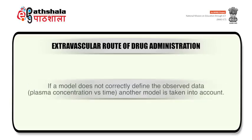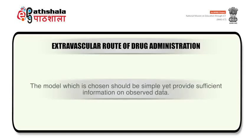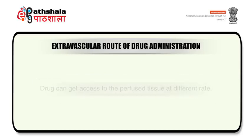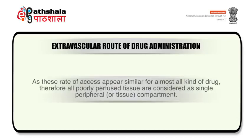It should be stressed that these compartments do not correspond to physiologically defined spaces; the liver is not a compartment. If a model does not correctly describe the observed plasma concentration versus time data, another model is taken into account. The model chosen should be simple yet provide sufficient information on the observed data. At some time point, a pseudo-distribution equilibrium is attained between the central compartment and the peripheral compartment, which is less readily accessible. After attainment of this pseudo-distribution equilibrium, a mono-exponential equation can be used to describe loss of drug from plasma. All poorly perfused tissues are considered as a single peripheral or tissue compartment.